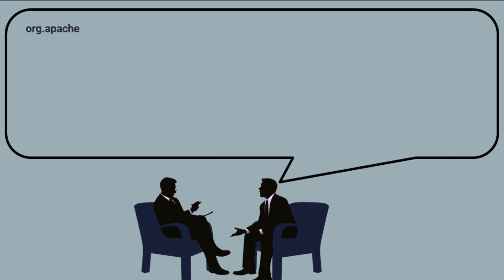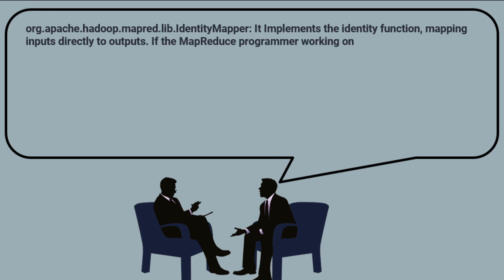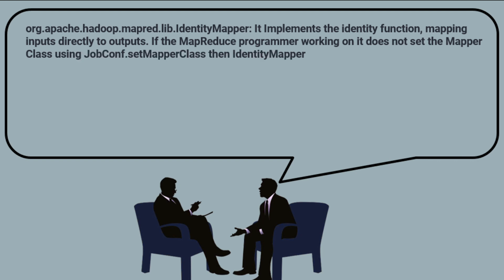org.apache.hadoop.mapred.lib.IdentityMapper implements the identity function, mapping inputs directly to the output of the MapReduce program. If the program does not set the mapper class using job.setMapperClass(), then IdentityMapper.class is used as the default value.